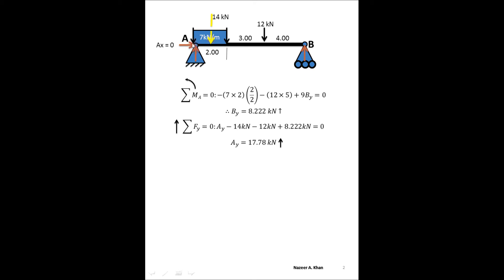I'm going to do moments about point A. It will eliminate the most amount of unknown force at that point. I'm going to have a moment created by the UDL, a moment created by the point force, and a moment created by the reactant at B. So we're going to have three moments, three sets of terms. Terms are separated by minus and plus signs. The equation is summation moments about point A equals zero, and counterclockwise rotation is considered to be positive.